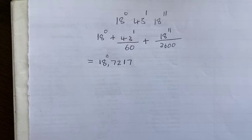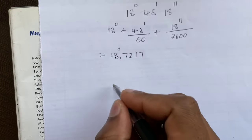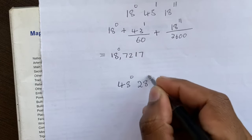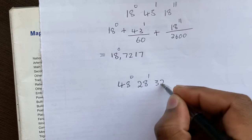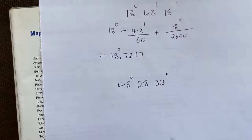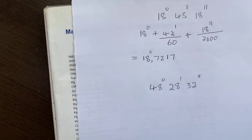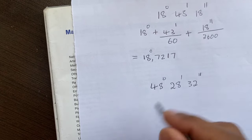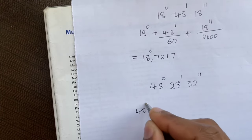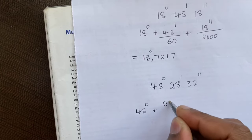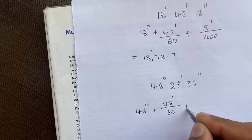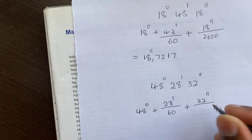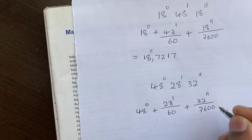Let's look at another example. You're given 48 degrees, 28 minutes, and 32 seconds. We apply the same rule: 48 degrees remains as is, so this is 48 degrees plus 28 minutes divided by 60, plus 32 seconds divided by 3600, as per the rule.